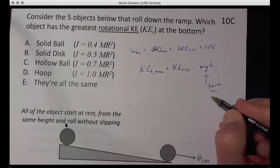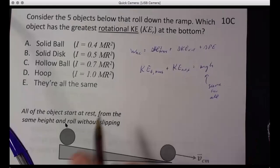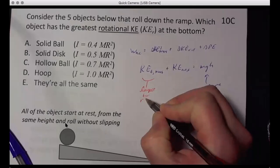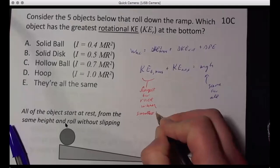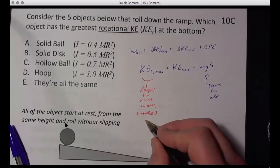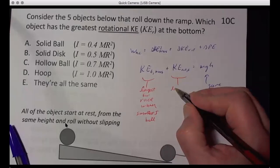And you say, okay, that's the same for all. The translation here is biggest for the winner. Race winner, which is the smallest I, and that's the ball. And this here adds up to that. So this is largest when this is the smallest.